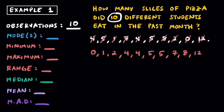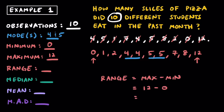Once they're in order, it's a little bit easier to spot any modes. In this dataset, we have two 4s and two 5s, which puts them in first place for being the most frequent numbers, so we have two modes: 4 and 5. Now that our observations are in order, we can easily see that 0 is our minimum and 12 will be our maximum. To find the range, we take 12 minus 0, so our range is 12. From the least to the greatest amount of slices, these 10 different students' data ranges 12 slices.